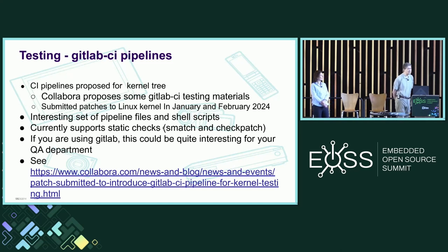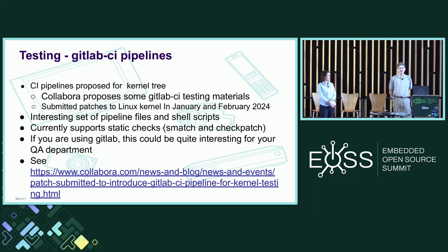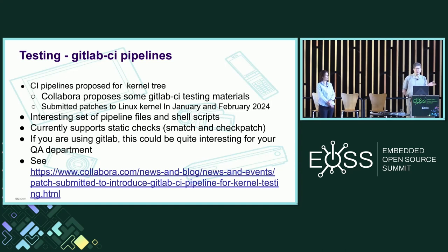A really interesting thing in testing: Collabora submitted CI pipelines upstream to put into the kernel source tree. Linus initially rejected this and didn't want it at top of tree, but there was discussion and it looks like it could go in a subdirectory where he doesn't have to pay attention to it. This is for GitLab CI specifically, but they structured it in its own directory, and you could envision other CI systems putting materials in parallel upstream. If this gets upstream, you'll be able to run CI right out of the box on the kernel source tree without adding additional stuff. We have kselftest but we don't have framework integration upstream — there's no reason not to be sharing that.